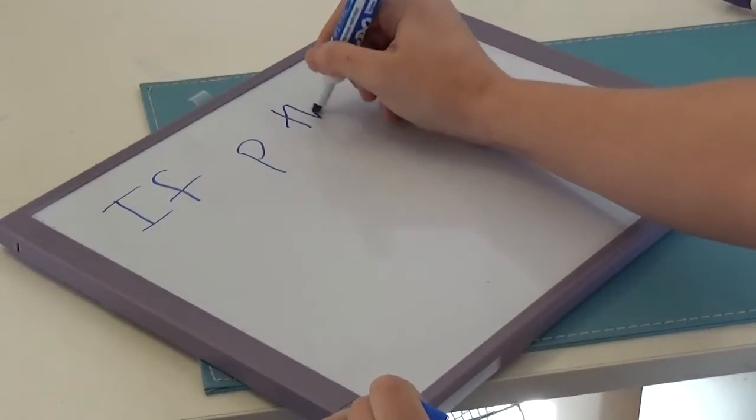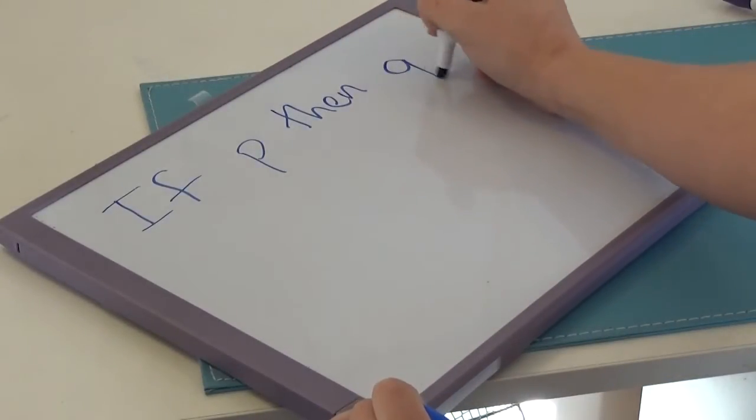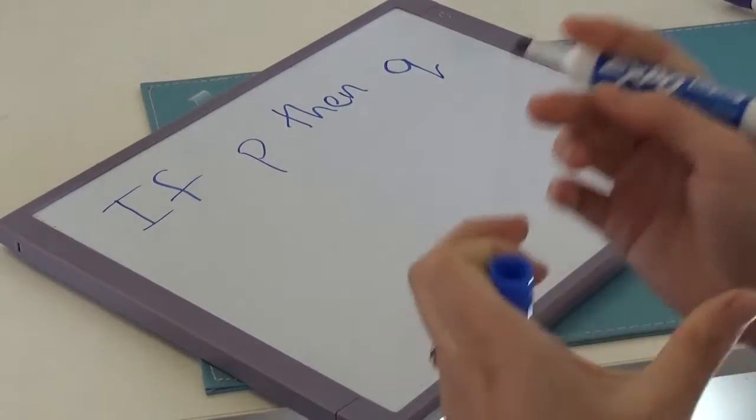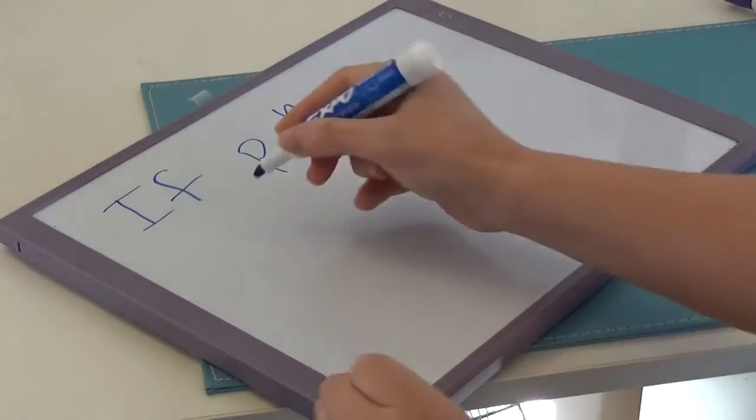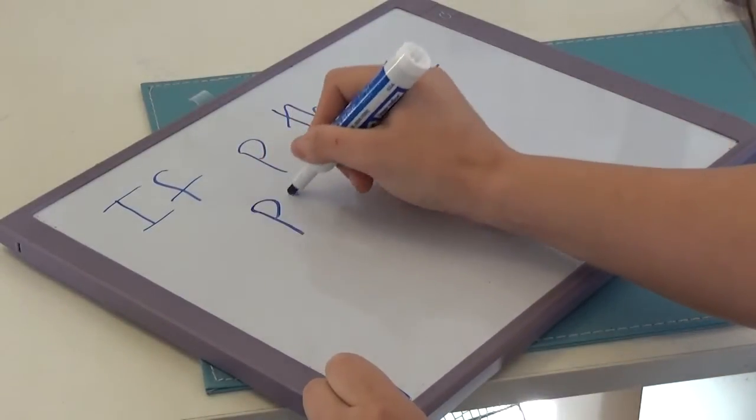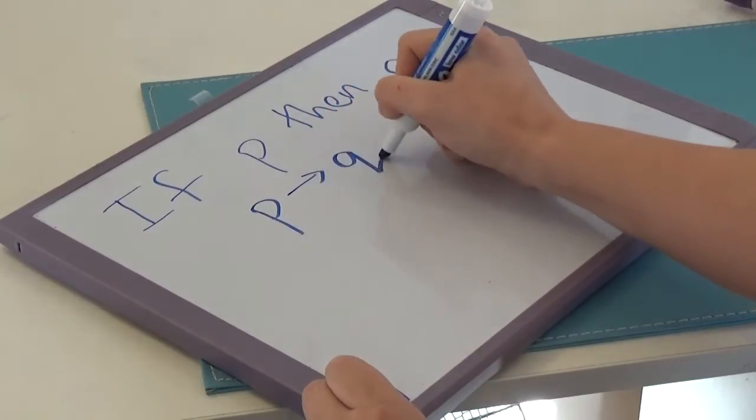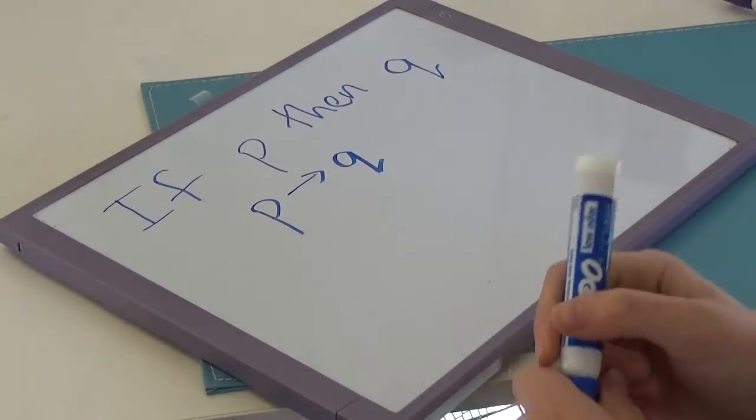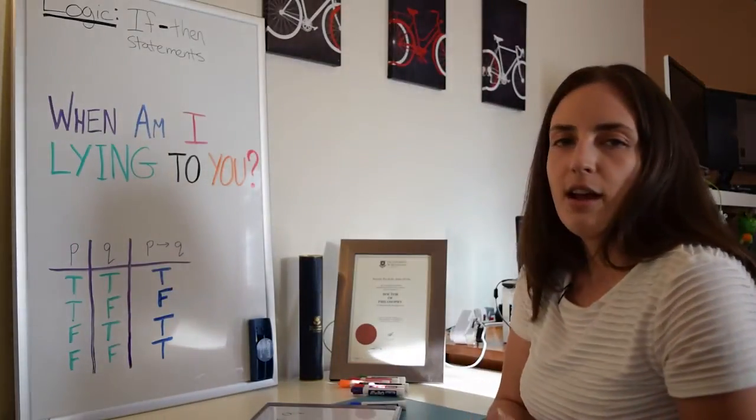If something then something else, and I'll write that as Q. And we have a nice shorthand for this in mathematics. We actually just write P→Q to mean exactly that, but we don't have to write the word if, and we don't have to write the word then. So, here's an example.